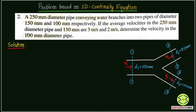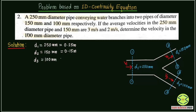As per the given problem, we have drawn the diagram. We know the diameters of all branches. D1 is 250 mm, which in meters is 0.25 m. The diameter of the second branch, D2, is 150 mm, which is 0.15 m. The diameter of the third pipe, D3, is 100 mm, which is 0.10 m. All diameters have been converted to meters.